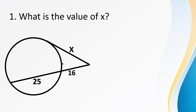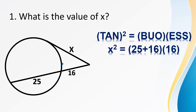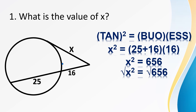Example: what is the value of X? The missing value is a tangent line. The theorem says: square the tangent, then multiply the full secant segment by its external secant segment. We have 25 plus 16 as the full secant line, times 16 as the external segment. So (25 + 16) times 16 equals 656. Get the square root of both sides, so the value of X is 25.61 — that's the measure of the tangent line.